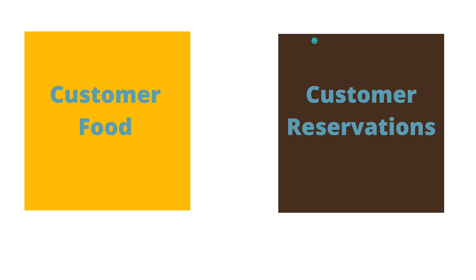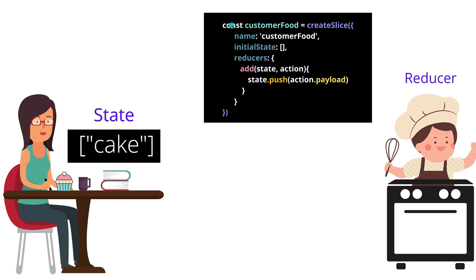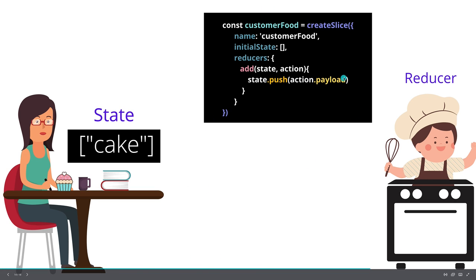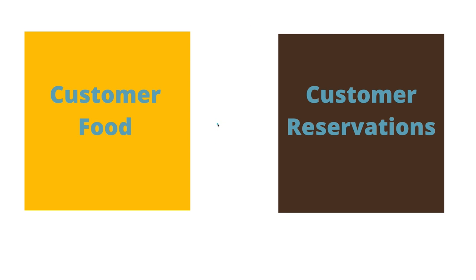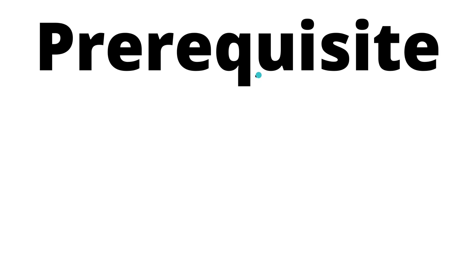A slice is a way to separate different pieces of state. For example, if we want to store a customer's food and also their reservations, those are two separate pieces of state, so we create two separate slices — one for customer food and one for customer reservations. That's how we organize state in Redux Toolkit.